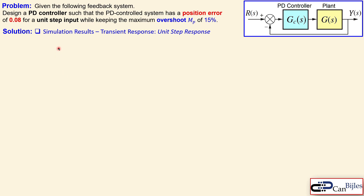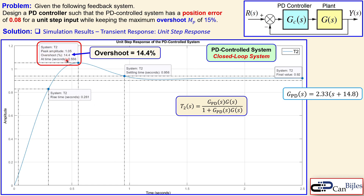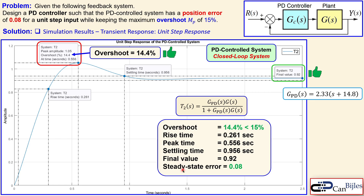Looking at the simulation results for the PD controller step response, the closed-loop transfer function again uses Mason's gain rule. We see an overshoot of 14.4 percent — just under the 15 percent requirement — and a final value of 0.92, giving the same steady-state error of 0.08. The summary results for rise time, peak time, and settling time all confirm the design meets specifications.